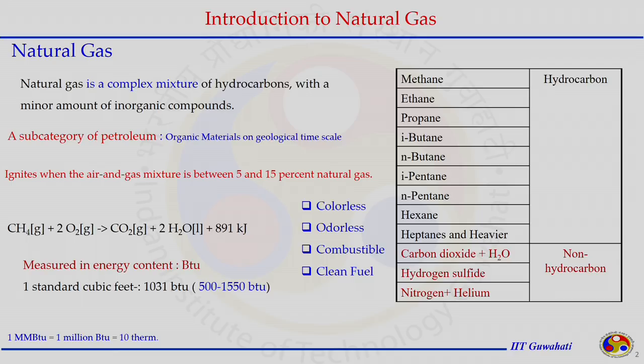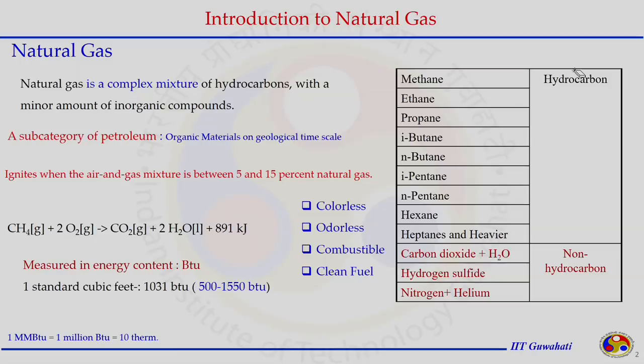By definition, natural gas is a complex mixture of hydrocarbons ranging from C1 methane up to C7–C8, with some non-hydrocarbon gases like carbon dioxide, sulfur dioxide, water vapor, trace amounts of nitrogen, and some rare gases like helium. These hydrocarbon gases are combustible by nature and produce energy when combusted. Natural gas comes under the subcategory of petroleum.